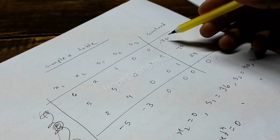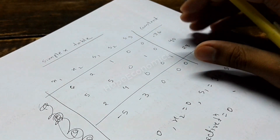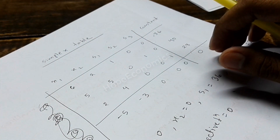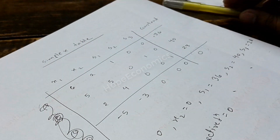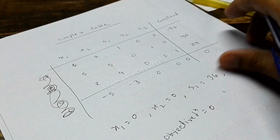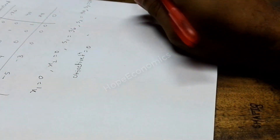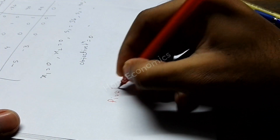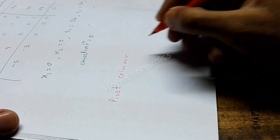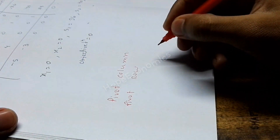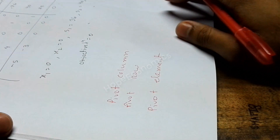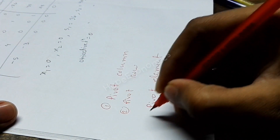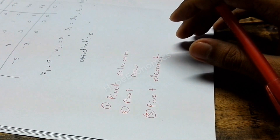Let's find out the pivot row and column. The pivot row and column are very important for the simplex algorithm method. To do mathematics following the simplex algorithm method, we have to find out the pivot row, pivot column, and pivot element. So let's write these three elements — pivot column, pivot row, and pivot element — which are all very important for the simplex algorithm method.